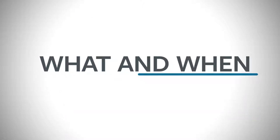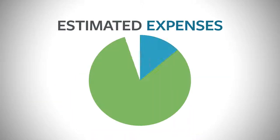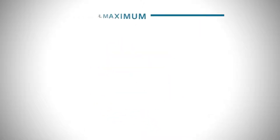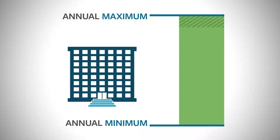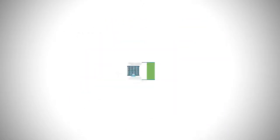Let's start with what and when. First, you determine how much money to put into your flexible spending account for the upcoming plan year. The best way to do this is to estimate the expenses you will incur in the coming year. Keep in mind that the annual maximum and minimum election amounts are determined by your employer — please check with them to find out what your company's limits are.